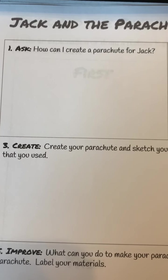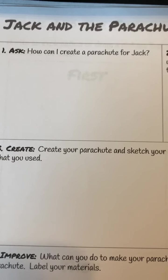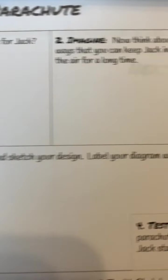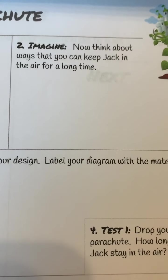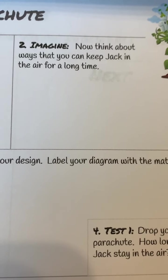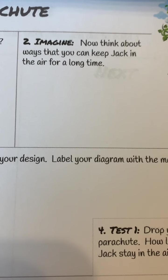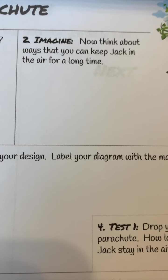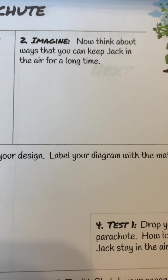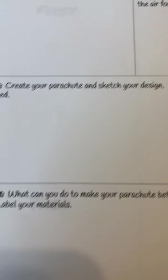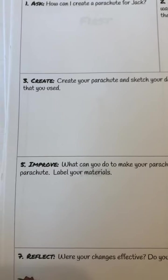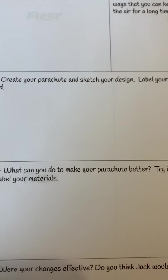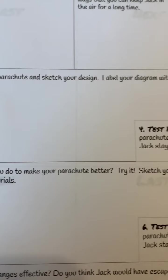There are three different papers you can use for your Jack and the Parachute activity, all found from that link — you do not have to print these off, you can always write them down. Number one: Ask — how can I create a parachute for Jack? Number two: Imagine — think about ways that you can keep Jack in the air for a long time. Number three: Create — create your parachute and sketch your design.